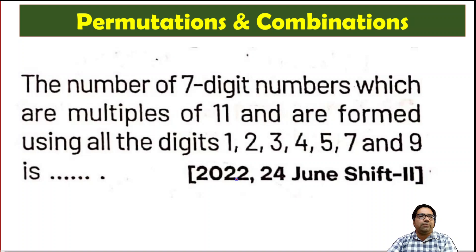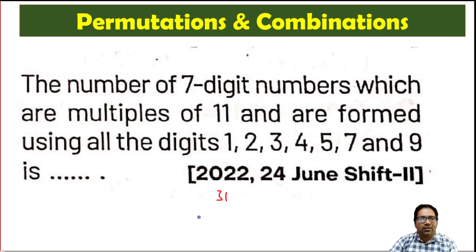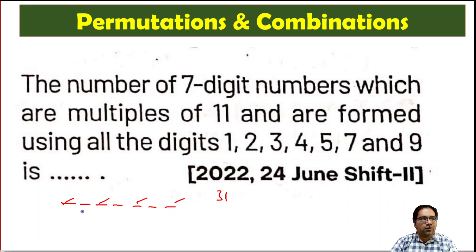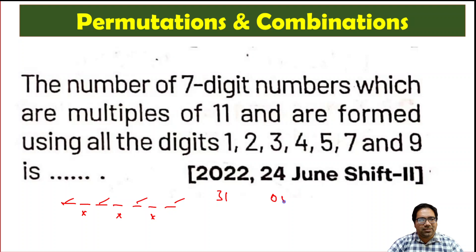That means whichever 7-digit number we are creating, the sum of digits will be equal to 31. And these numbers should be multiples of 11. When we create a 7-digit number, we have odd locations: positions 1, 2, 3, 4 — so 4 odd locations and 3 even locations. The sum of odd locations plus sum of even locations equals the total sum, which should be 31.